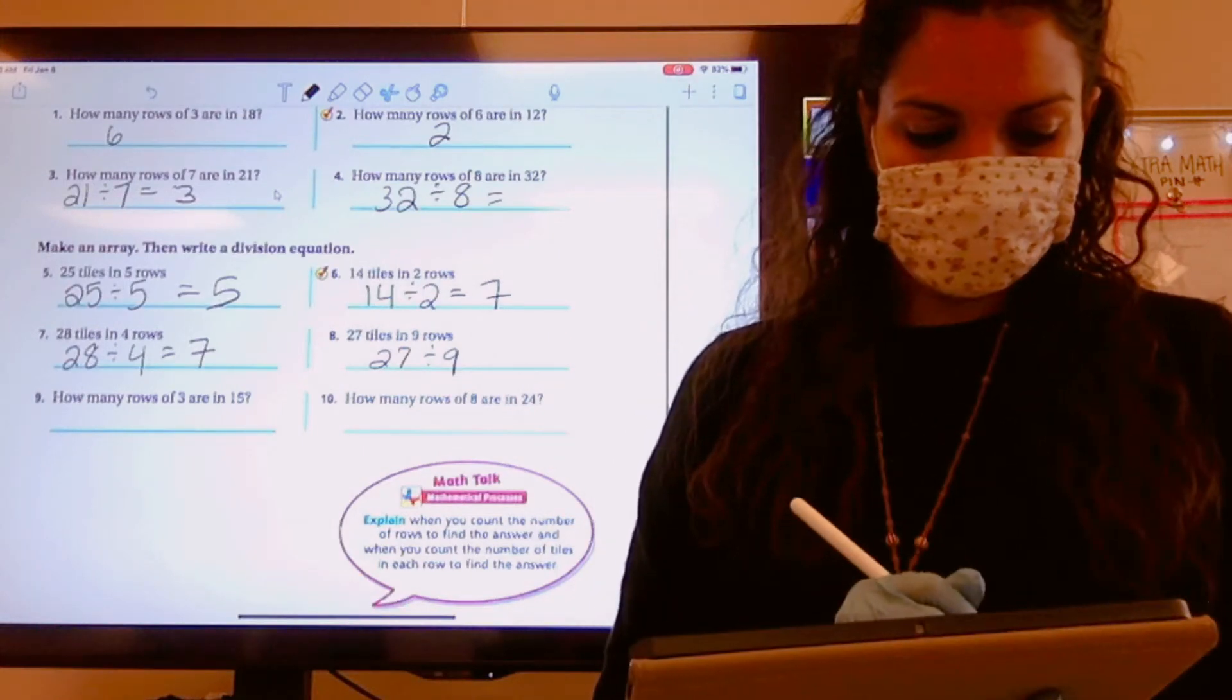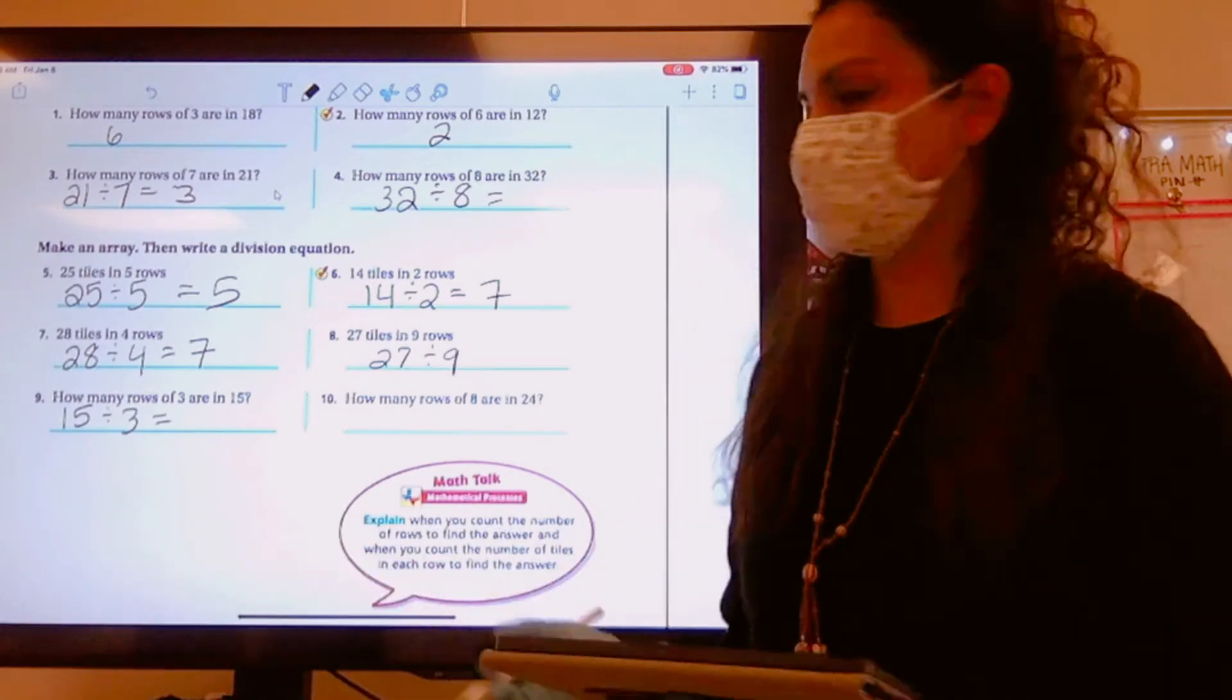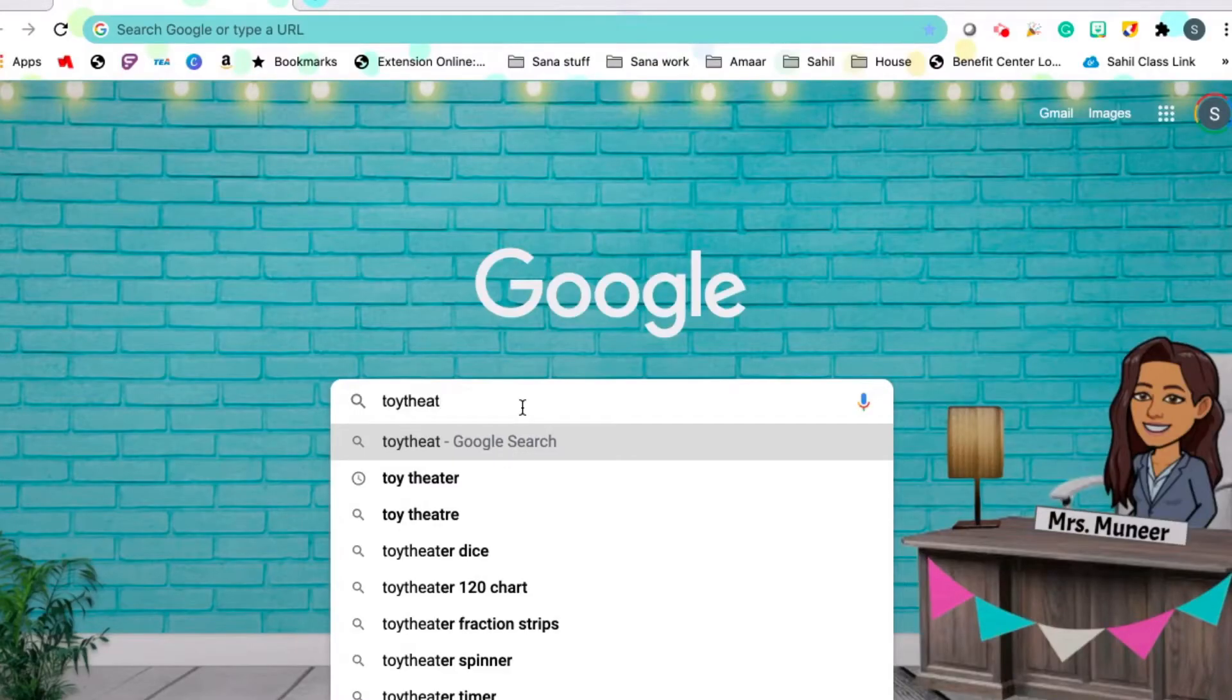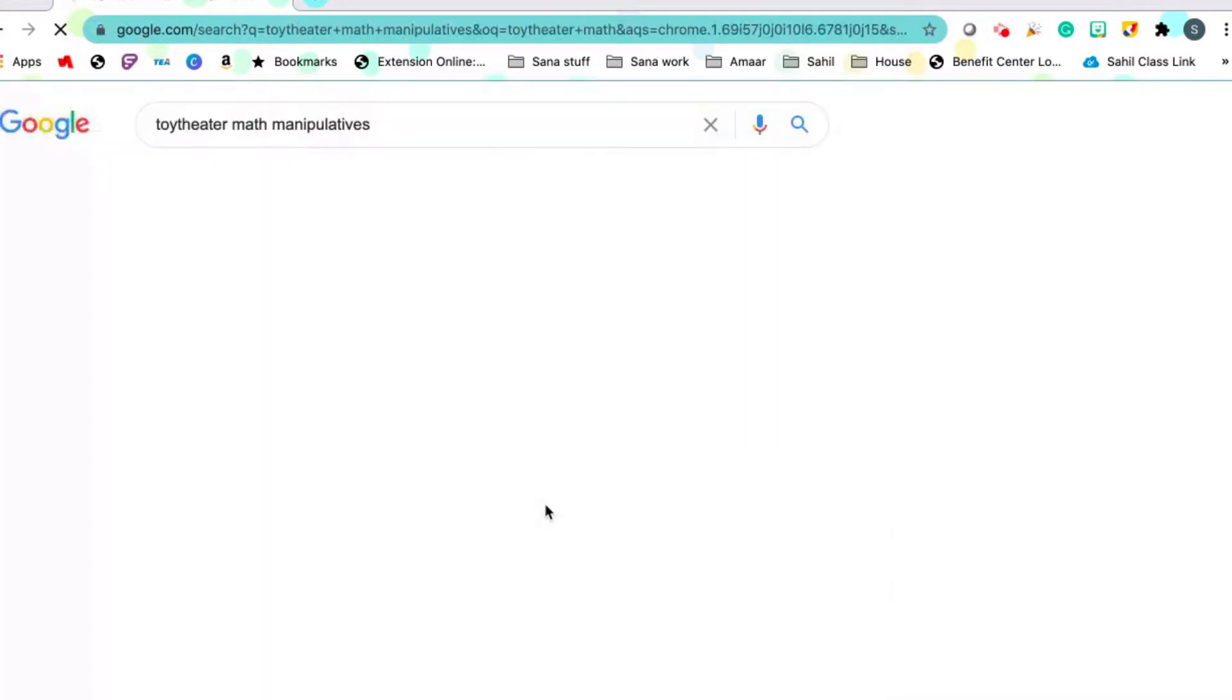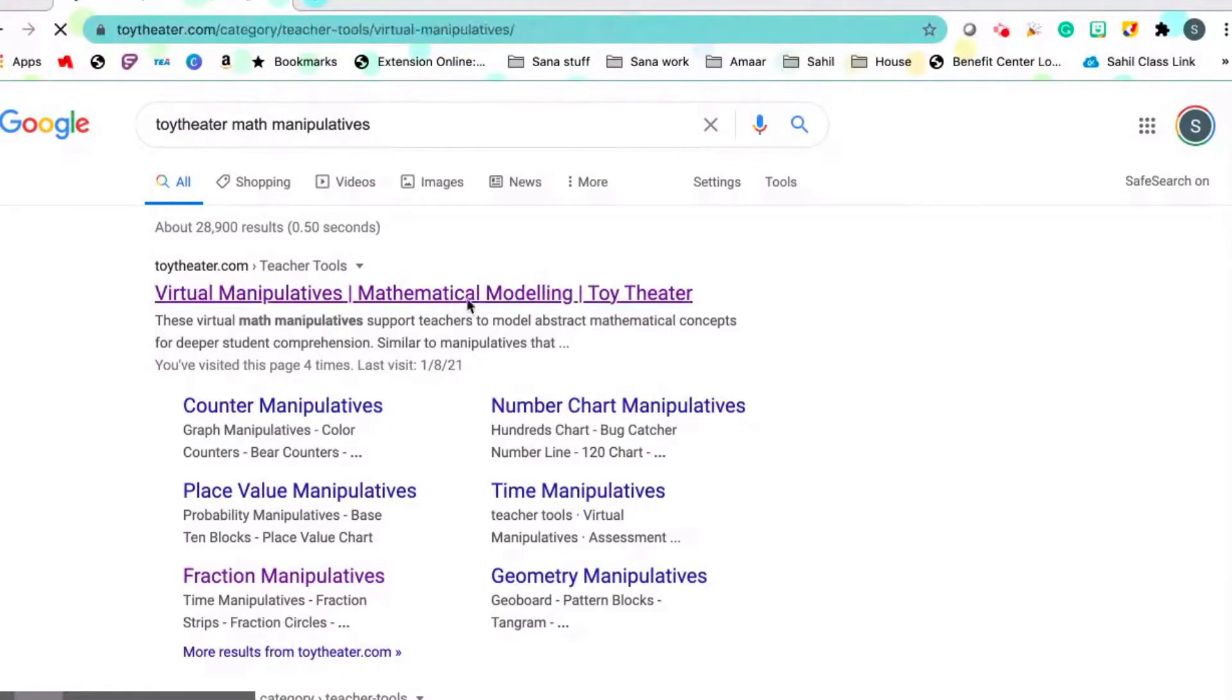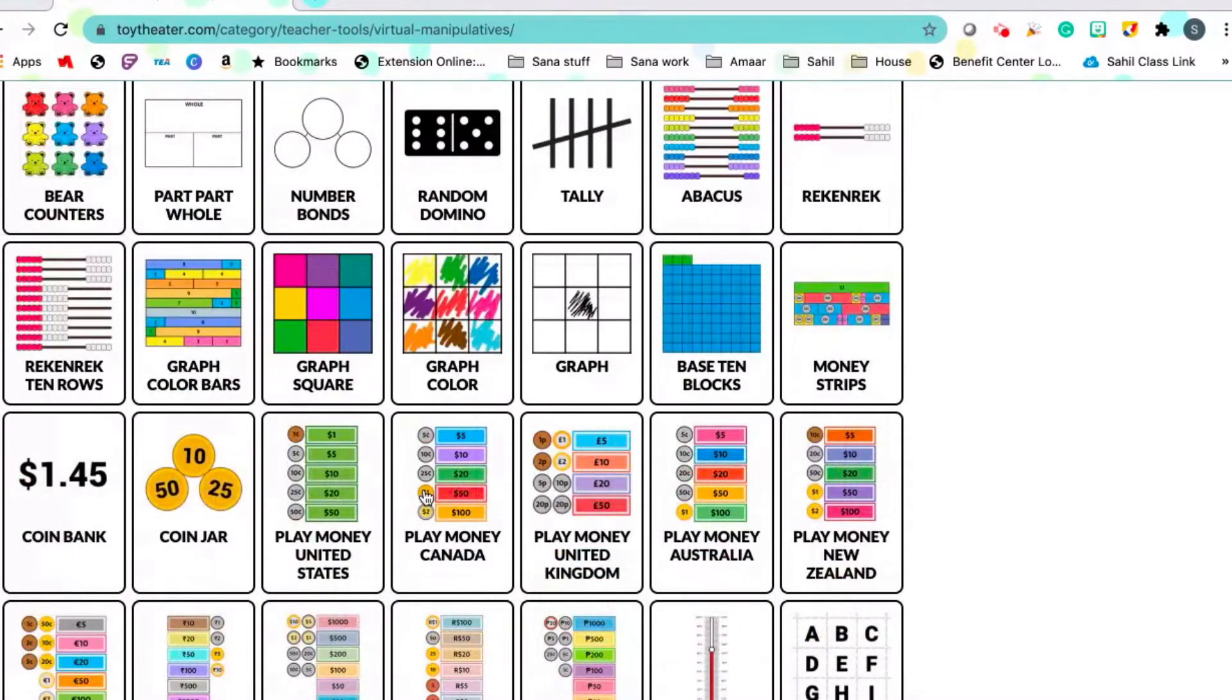Let's do the example 15 divided by 3. We're going to use a really cool tool. Go ahead and search on Google toy theater math manipulatives and click on the first option.